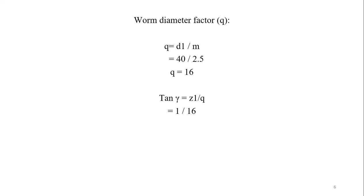Z1 is the number of starts. From the photograph shown at the start of the presentation, you can identify whether it is single start or double start. We have used a single start gear divided by the quotient factor, which is 16. It comes out to be 0.0625. Shifting tan to the other side, tan inverse of the value comes out to be lead angle gamma equals 3.58 degrees.